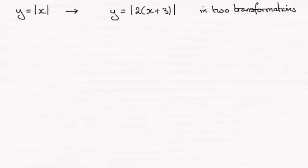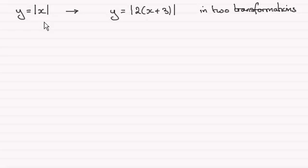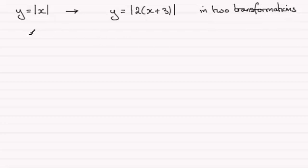Hi there. For this question we're given the graph of y equals mod x and asked to transform it to the graph y equals the mod of two lots of x plus 3, and to describe it in terms of transformations. In order to do this I'm assuming that you're familiar with transformations of graphs — if not, do check out my videos on this.